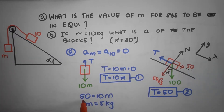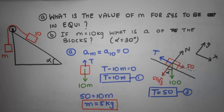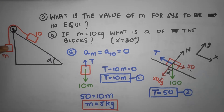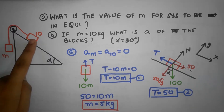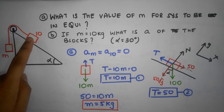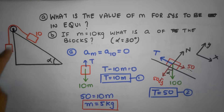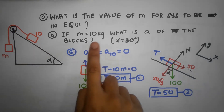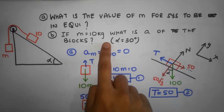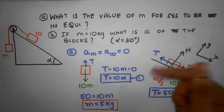So it's amazing that a 5 kilogram object can be in equilibrium with a 10 kilogram object - and it's all because of the incline. Now let's solve the second part of this problem.